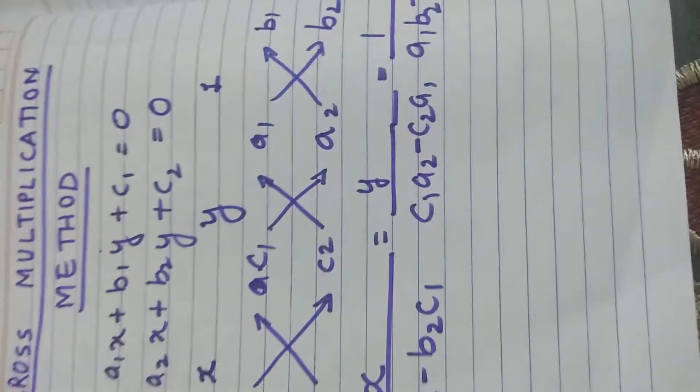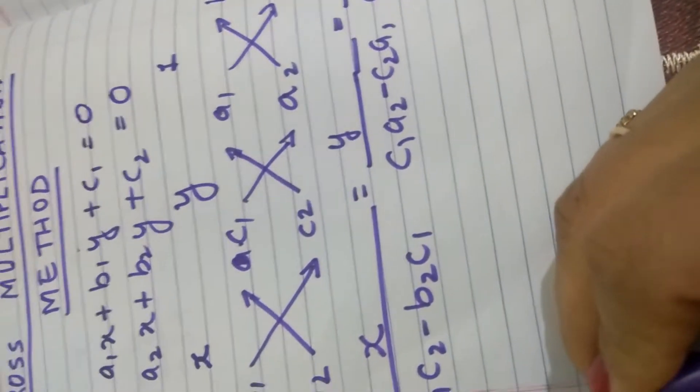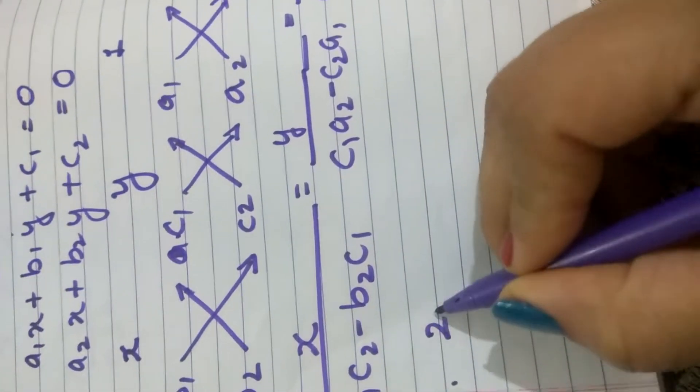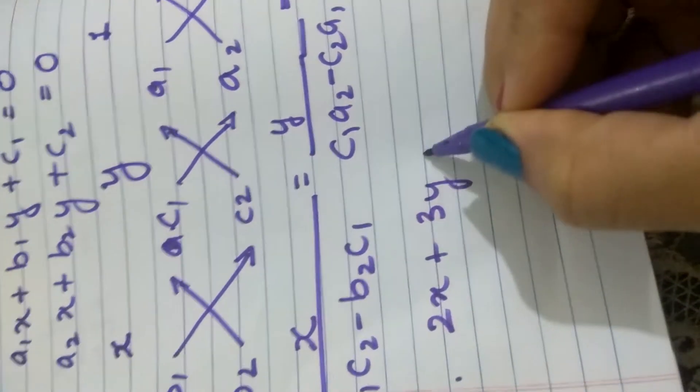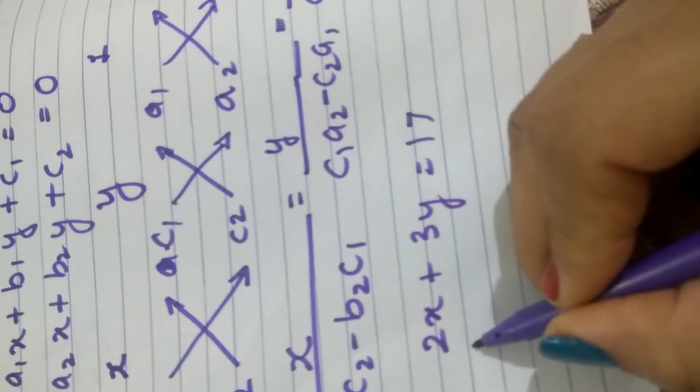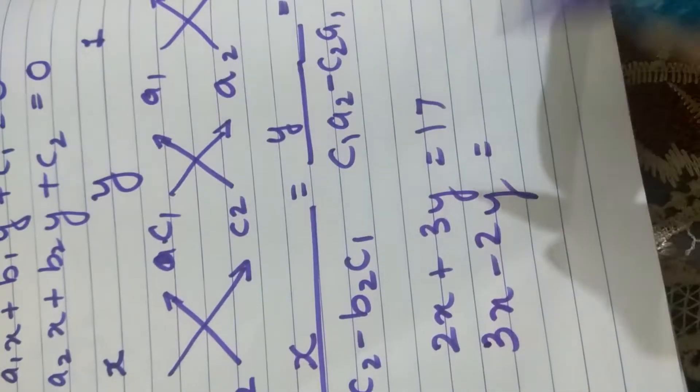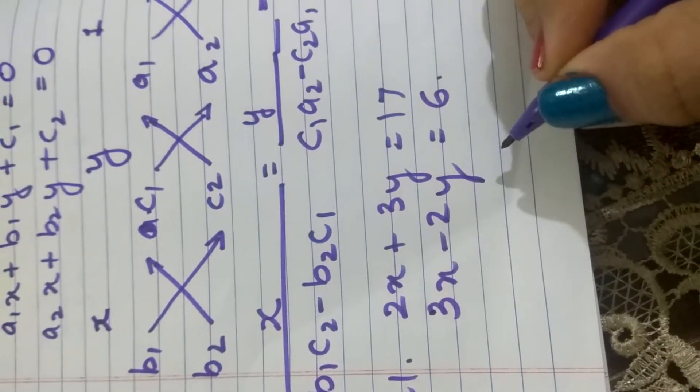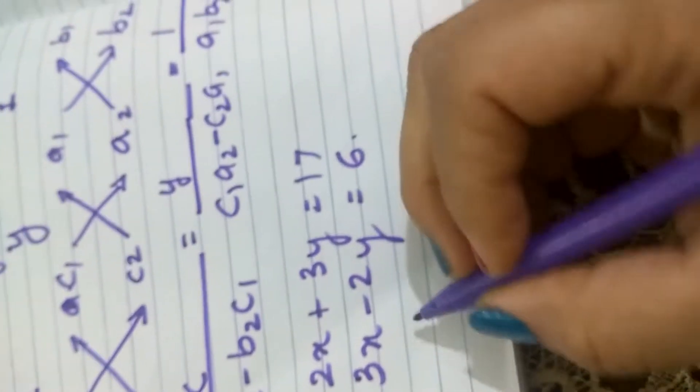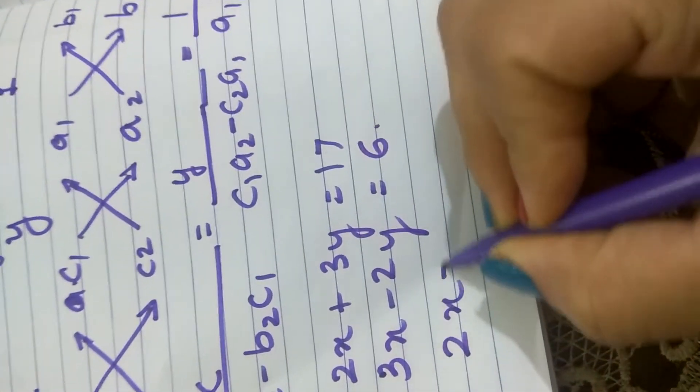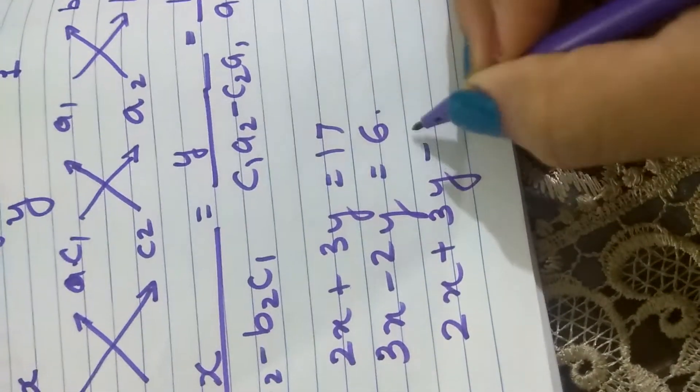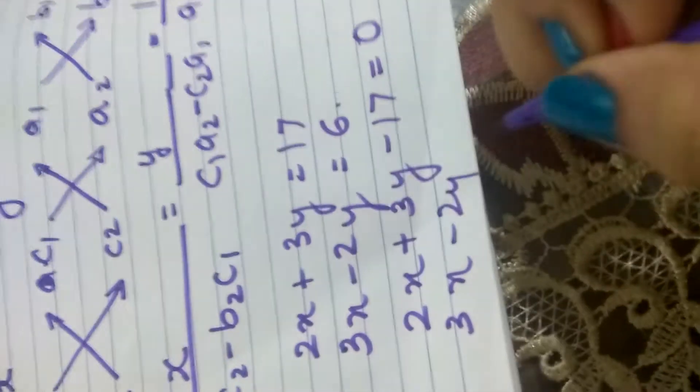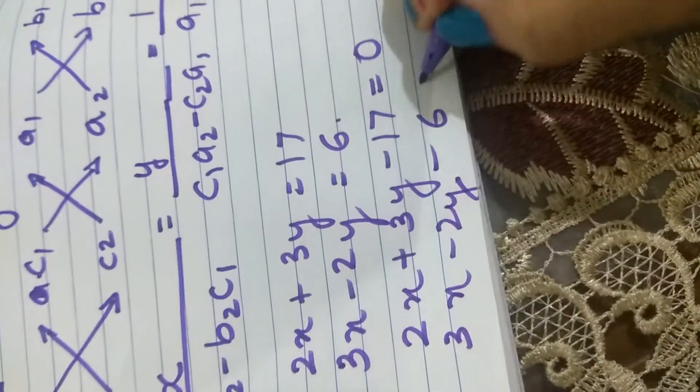Let us take one example. The given system of equations to us is 2x plus 3y equal to 17 and 3x minus 2y equal to 6. First we have to bring this to the standard form. That means bringing the constant to the other side. The equations will become 2x plus 3y minus 17 equal to 0 and 3x minus 2y minus 6 equal to 0.